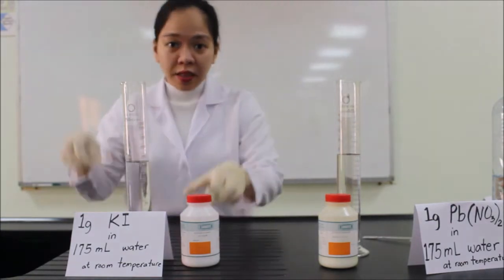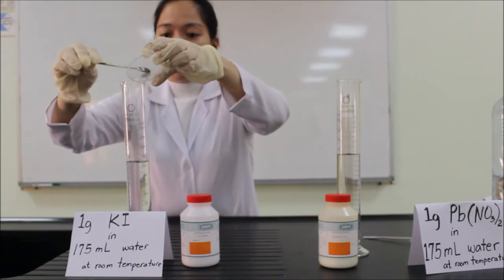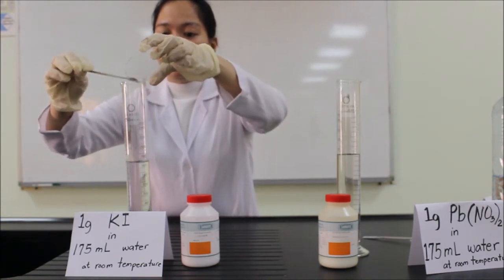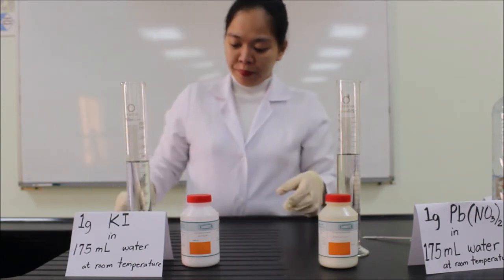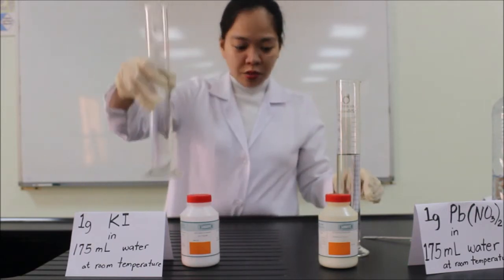And here is the 1 gram of potassium iodide in 175 ml of water at room temperature. And wait until it dissolves.